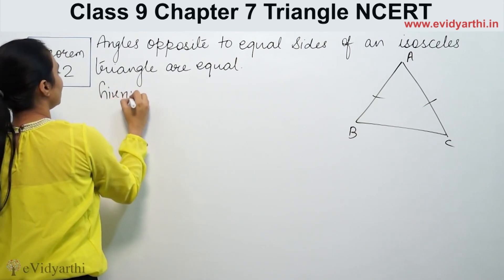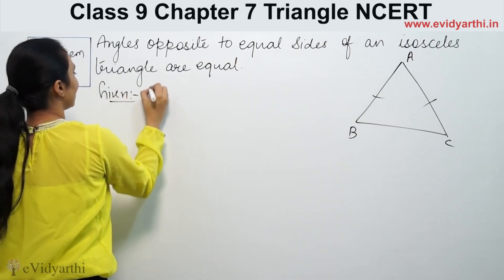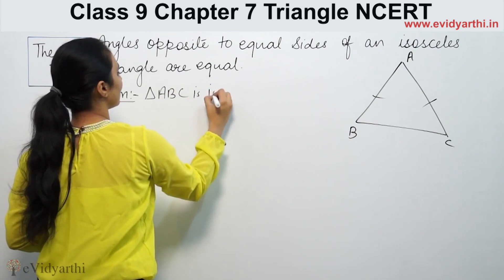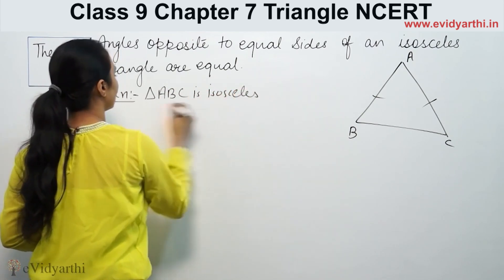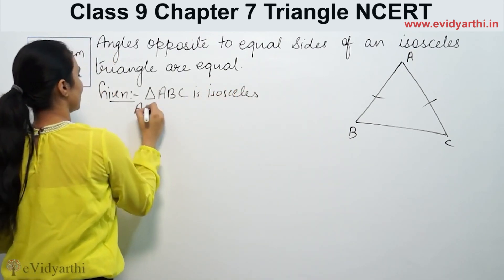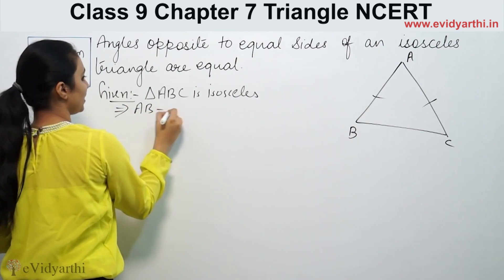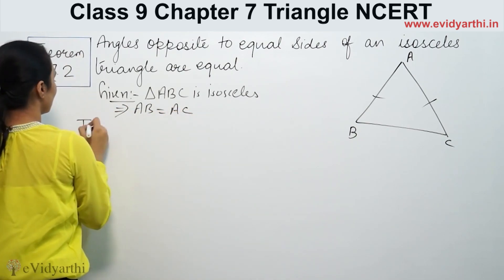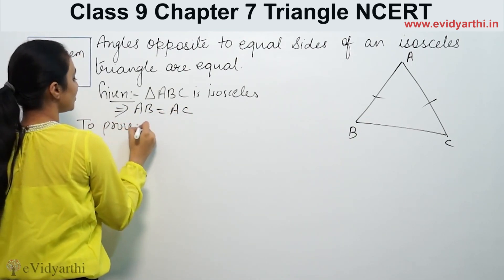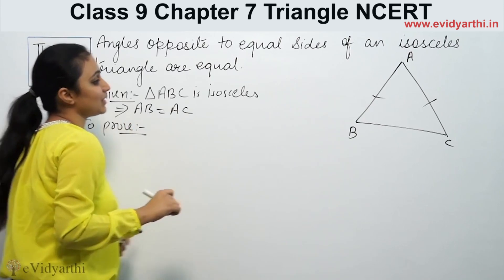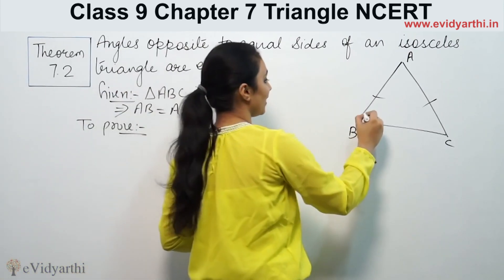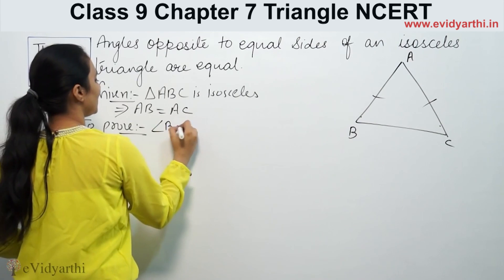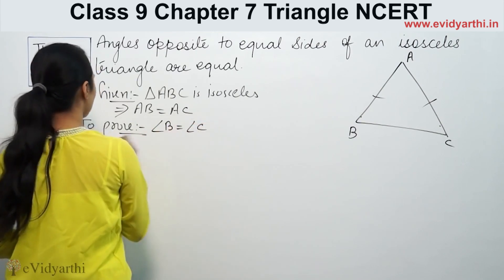We are given that triangle ABC is isosceles, meaning AB is equal to AC. We have to prove that the angles opposite to the equal sides are equal — that is, we have to prove that angle B equals angle C.